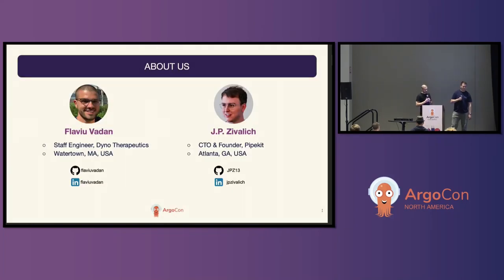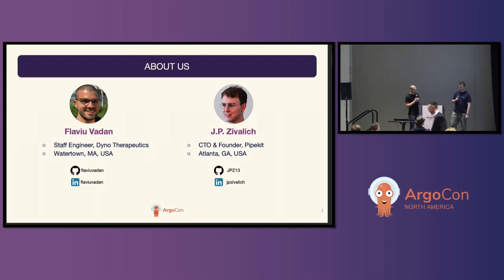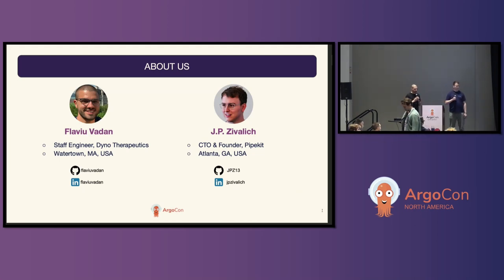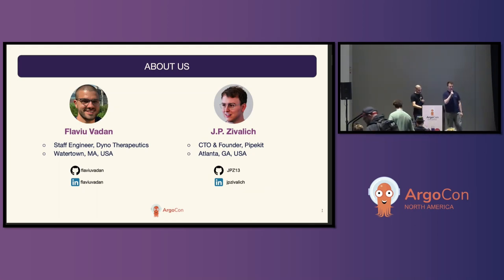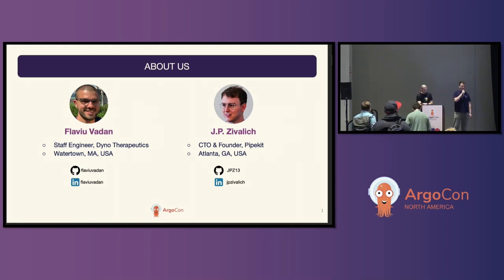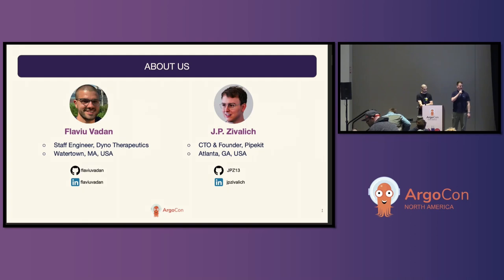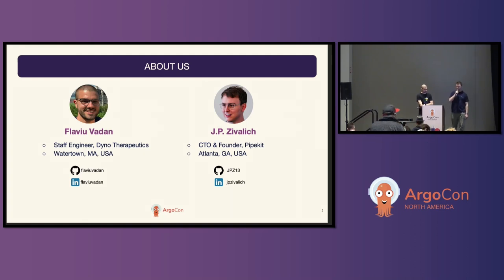We'll do some quick intros. My name is Flaviu. I'm a staff engineer at Dyna Therapeutics, a biotech company in Watertown, Massachusetts, where we focus on designing delivery mechanisms for gene therapies. And my name is JP Zivilich. I am the CTO and co-founder of PipeKit, where we do expertise services with Argo and additionally provide a control plane on top of Argo Workflows.